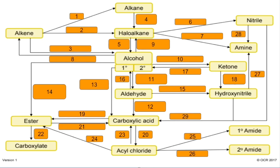Number one: alkene to alkane is hydrogen with a nickel catalyst and you also need a temperature of 150 degrees C. Number two: alkene to haloalkane — you react it with a hydrogen halide.